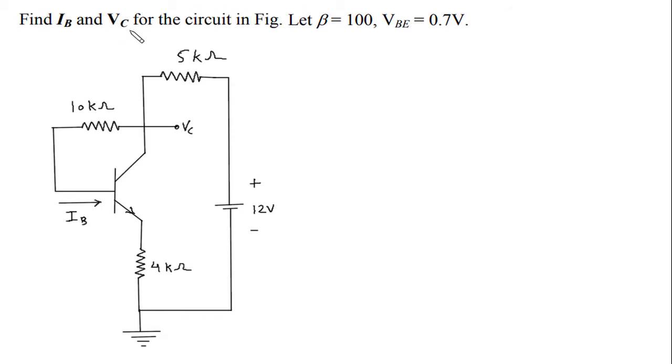Find IB and VC for the circuit in the figure, where β is equal to 100 and VBE is equal to 0.7V.